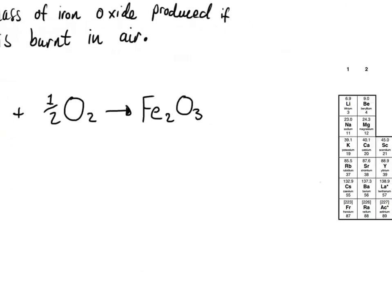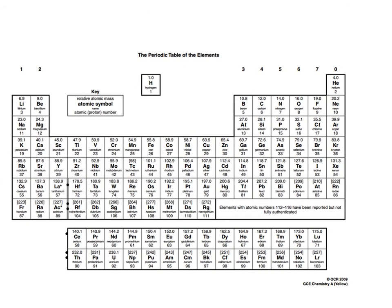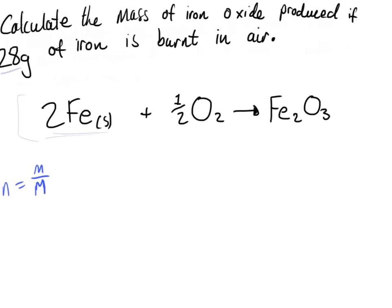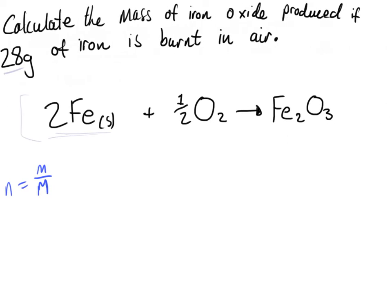So first I'm going to go to the periodic table and look for the mass of iron. This periodic table is from OCR. As you can see, the relative atomic mass of iron is 55.8. So M equals 55.8, and the number of moles equals mass divided by molar mass — mass is 28.